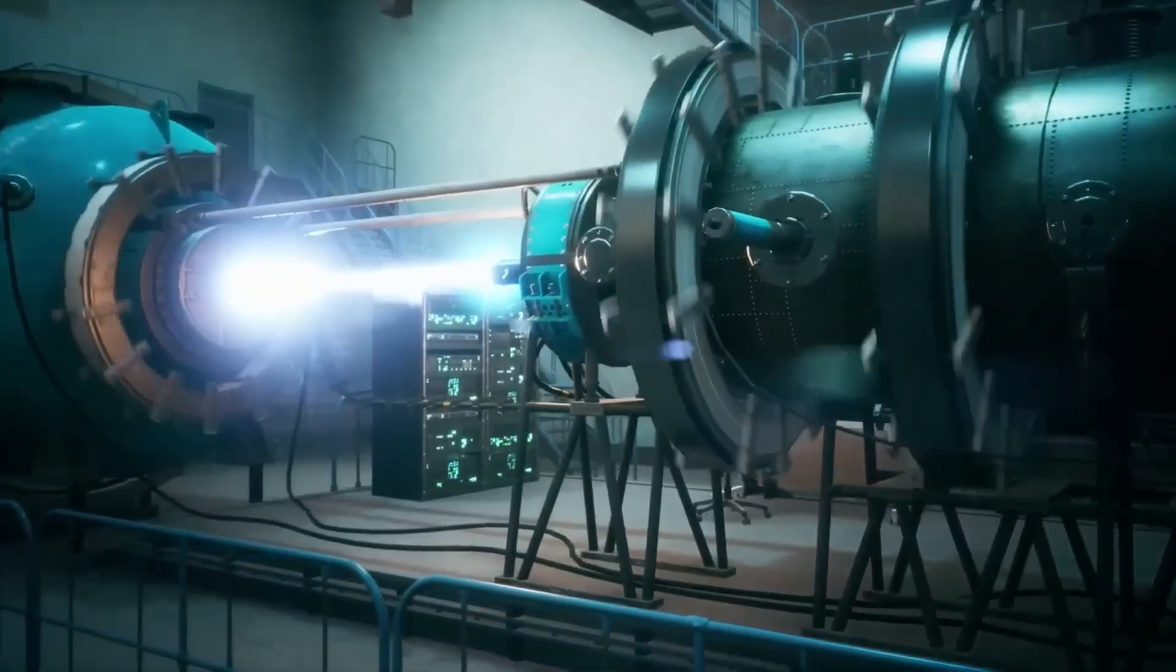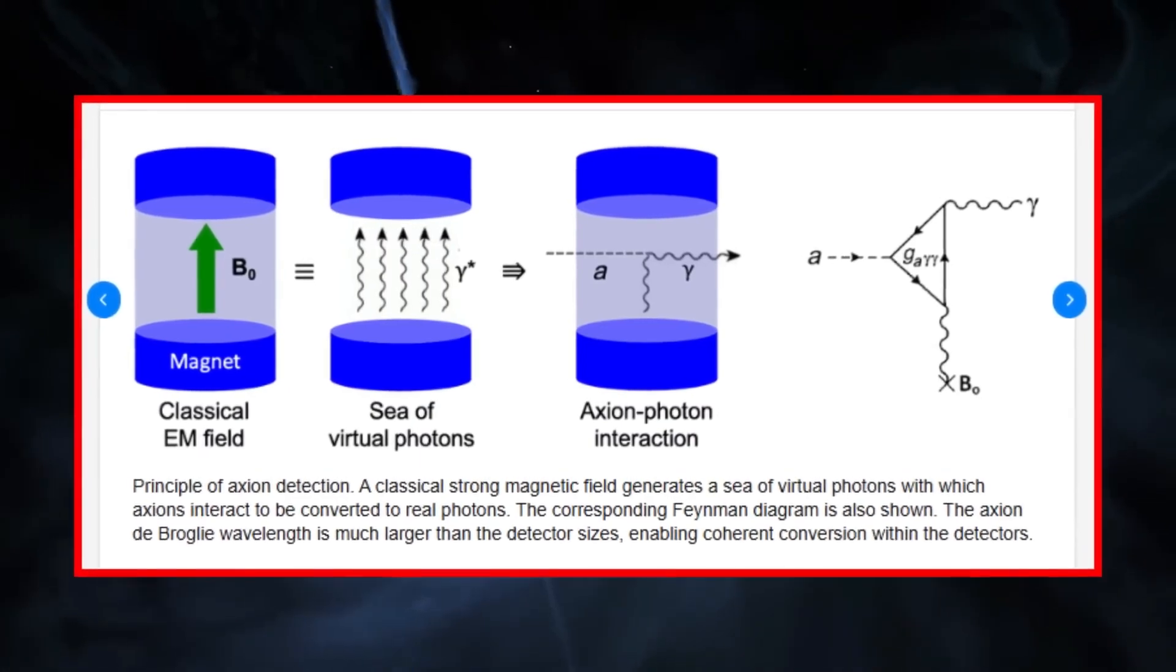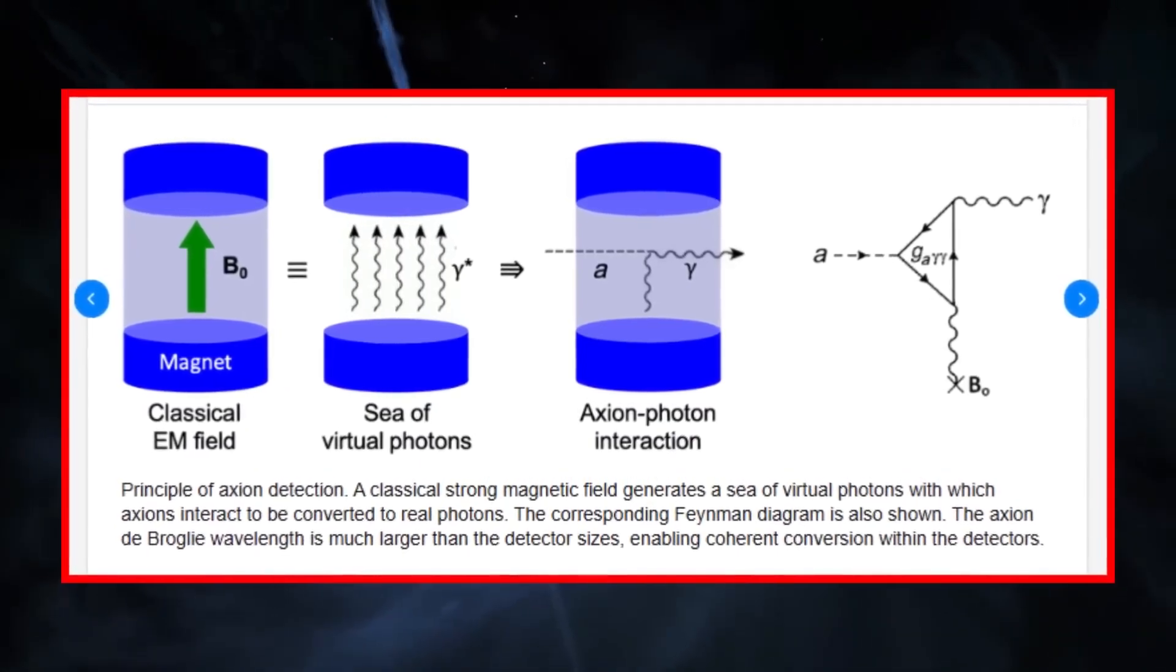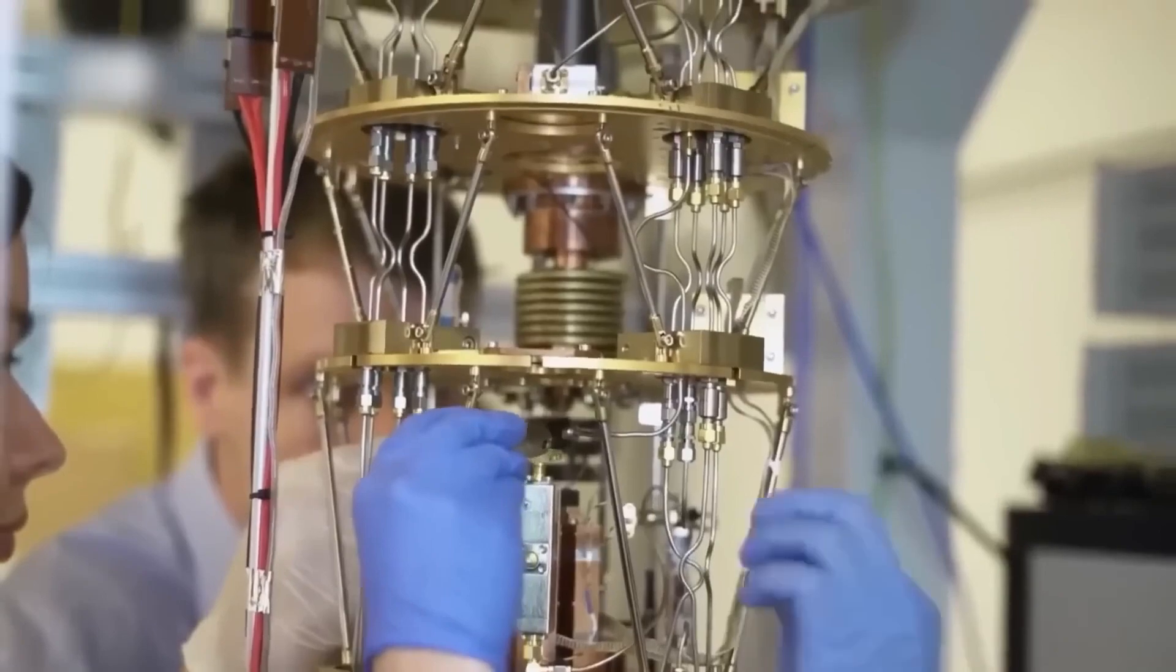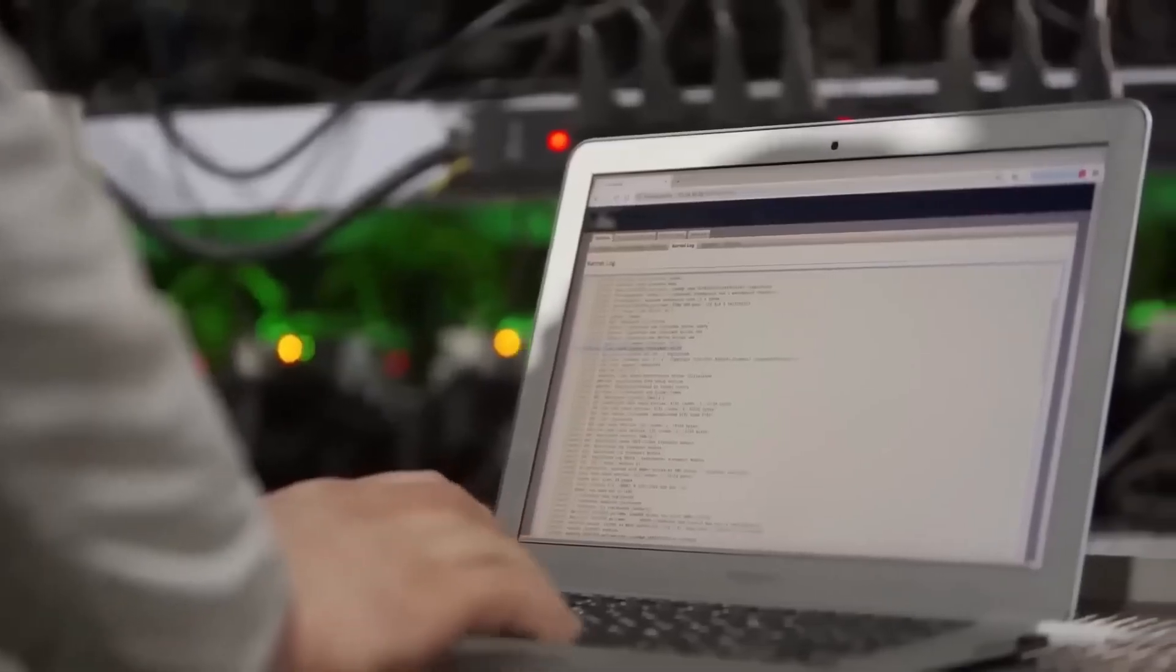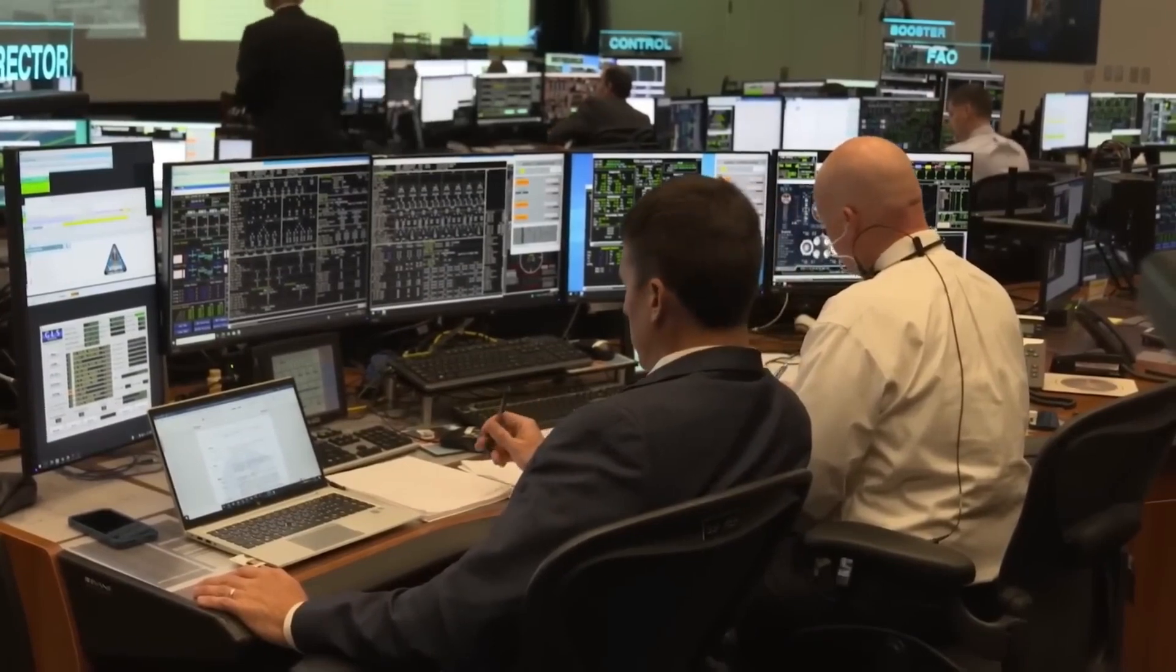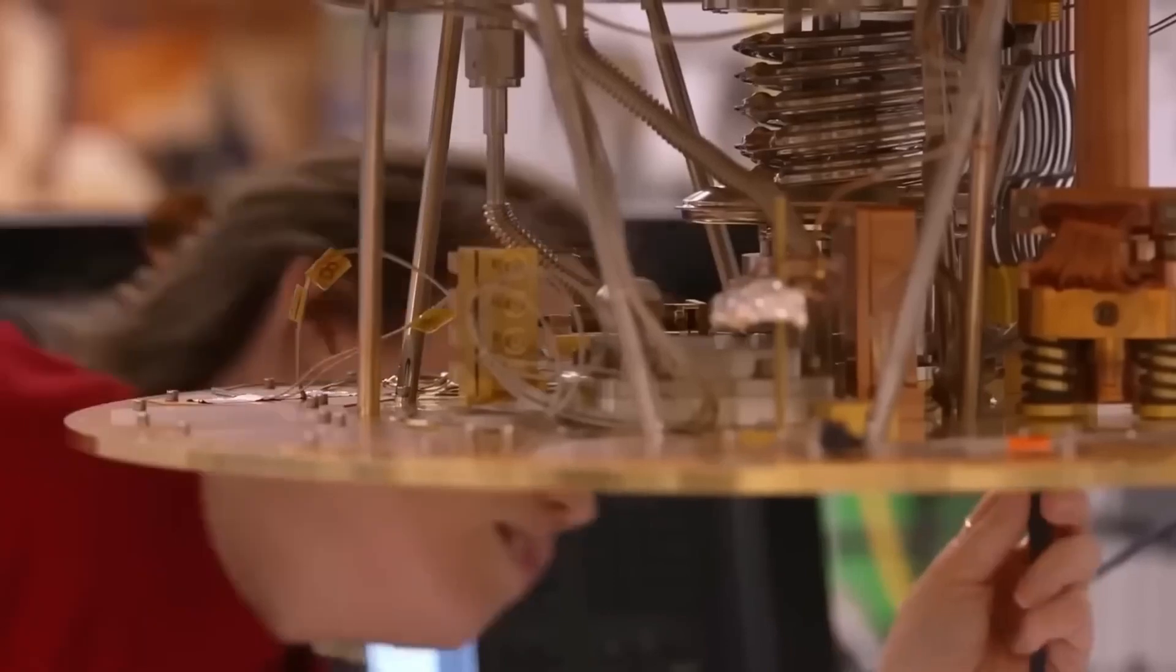This raises an even bigger question: are quantum computers simply detecting axions, or are they unintentionally interacting with them in ways we don't yet understand? If so, we might be on the edge of a discovery that goes far beyond dark matter, one that challenges the very nature of reality itself.